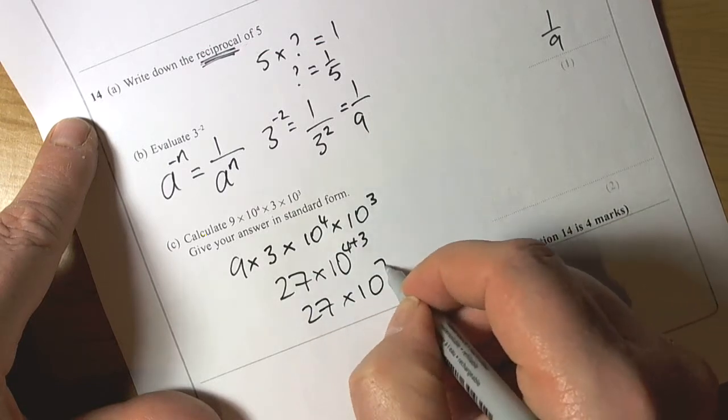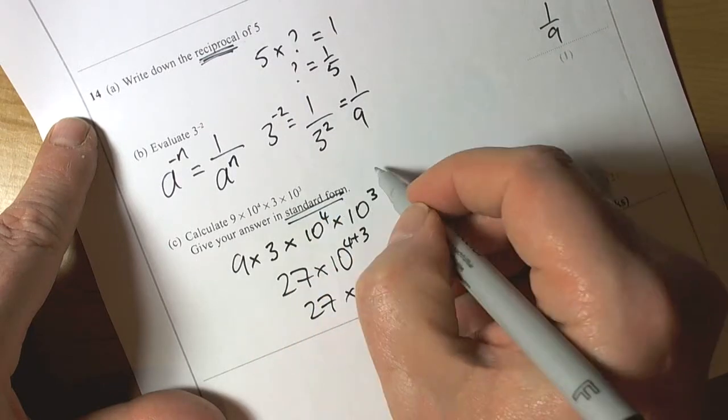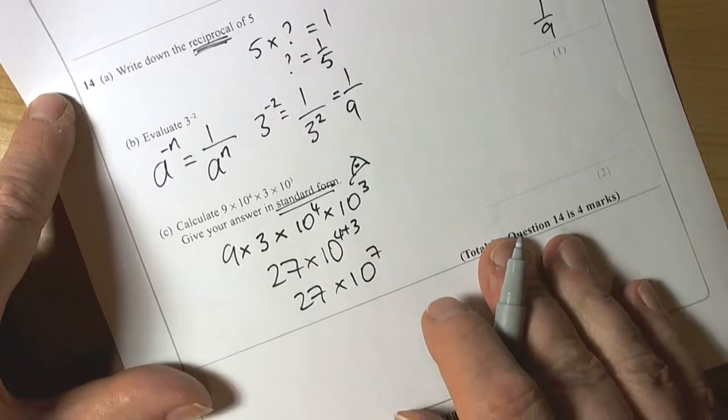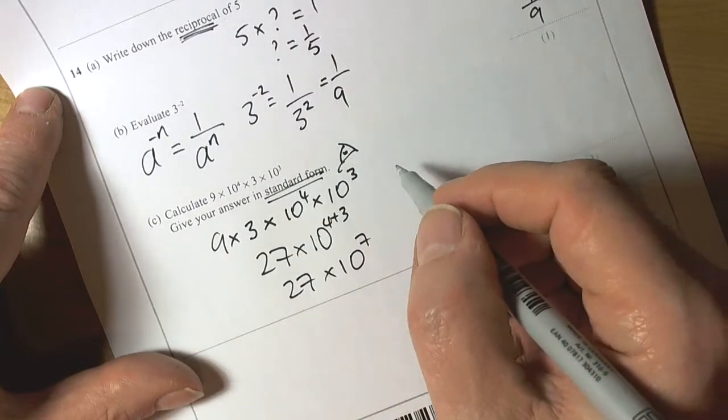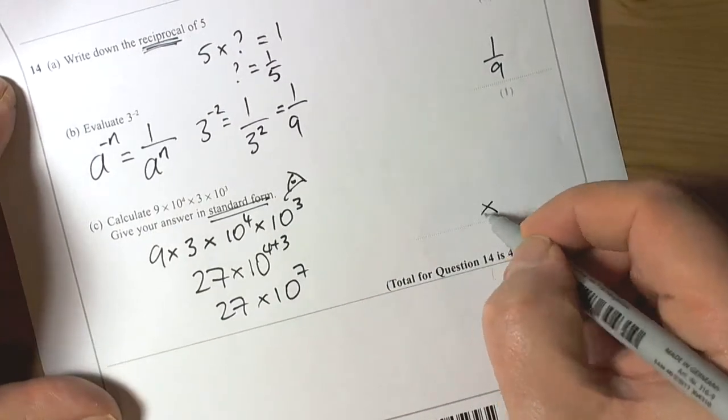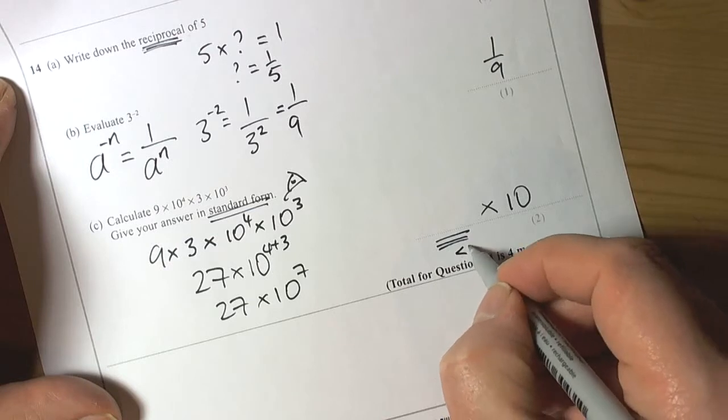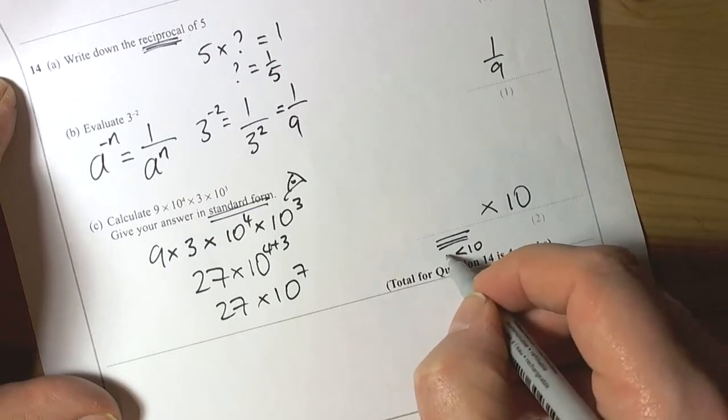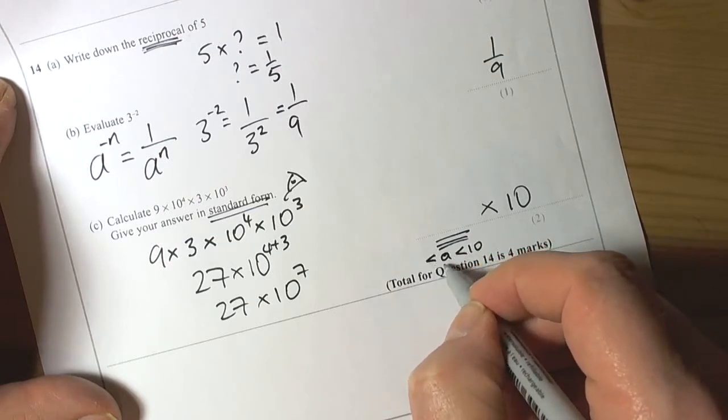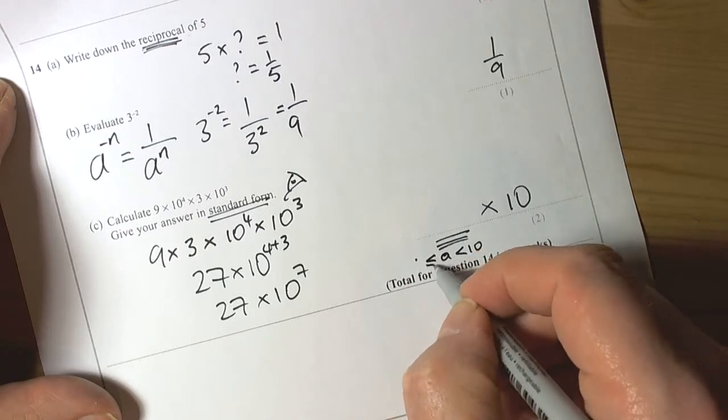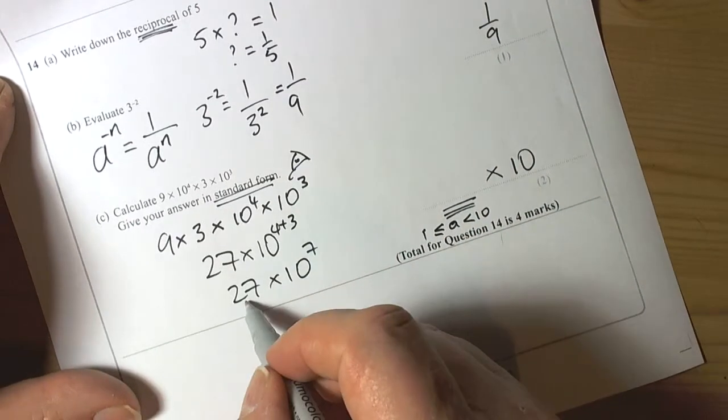That gives me twenty-seven times ten to the power of seven. But we've got to remember that the question says work in standard form. Standard form numbers are always going to be times ten to the power of something, but the front has to be less than ten but bigger than or equal to one.